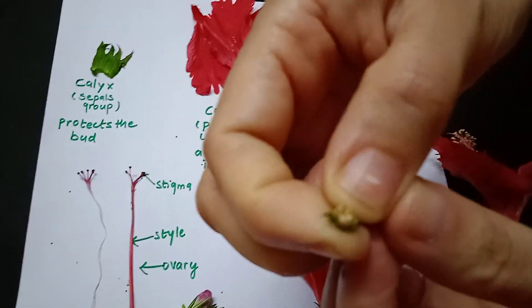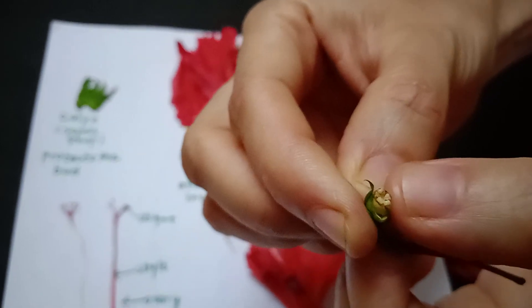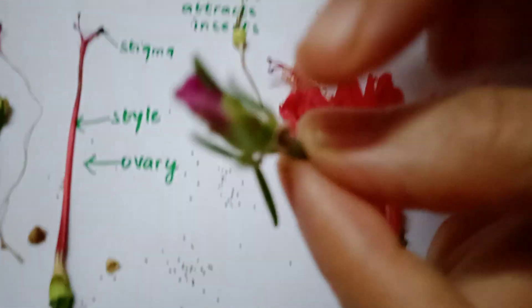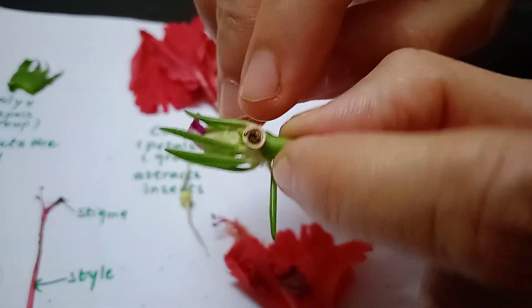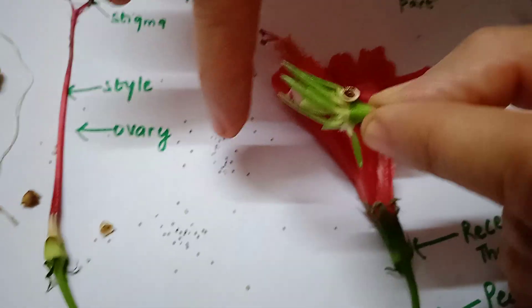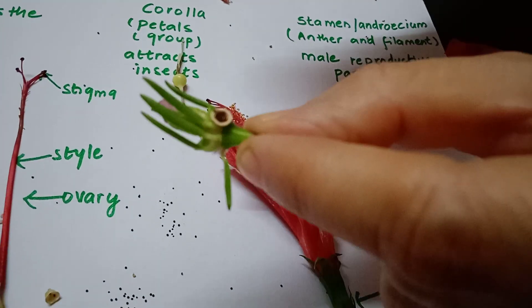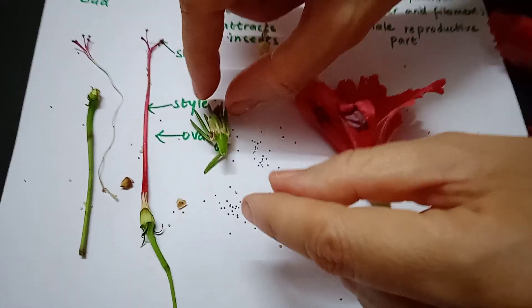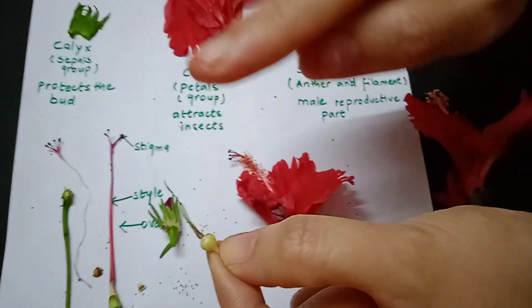When the ovary is cut open, you get ovules — tiny structures inside. From the hibiscus flower, you can see them coming out. I also show a portulaca flower whose ovary contains small black dried structures — these are ovules or dried seeds. Very important: the ovary becomes a fruit and the ovules become seeds.